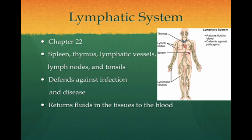The lymphatic system includes major organs such as the spleen, thymus, lymphatic vessels, lymph nodes, and tonsils. This system defends the body against infection and disease and also returns fluids in the tissues back to the blood. This system is studied in Chapter 22.